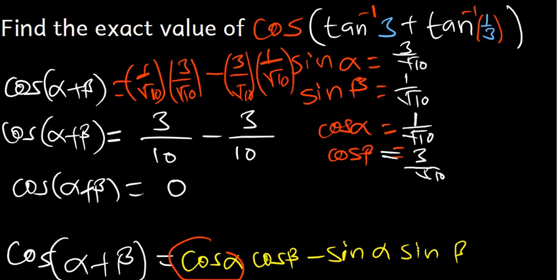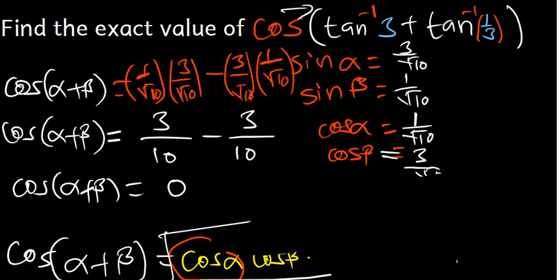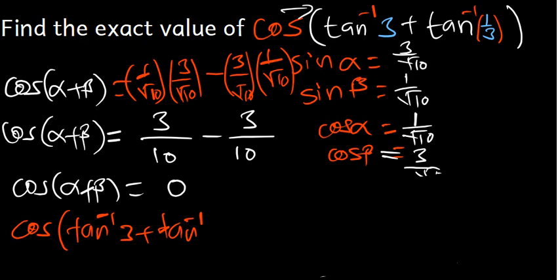So cos(α + β) = 0. Since α and β represent our original inverse tangent expressions, we have not changed anything. In conclusion, the exact value of cos(tan⁻¹3 + tan⁻¹(1/3)) is equal to 0.